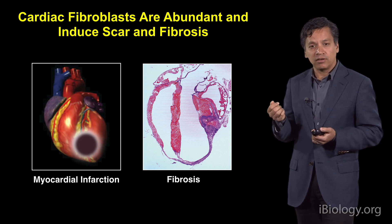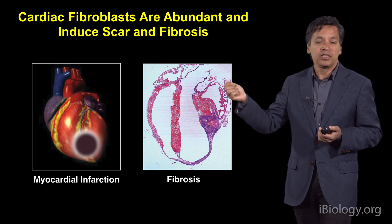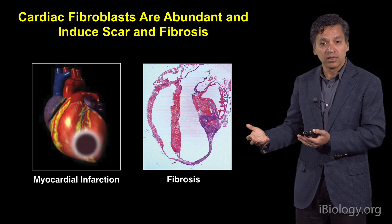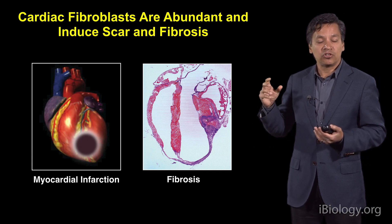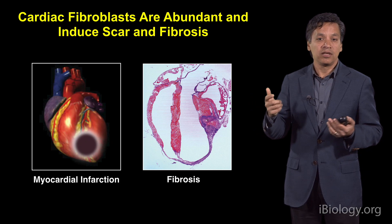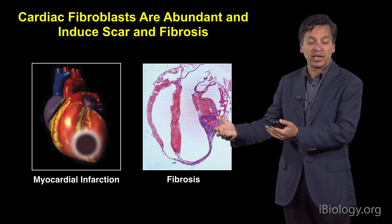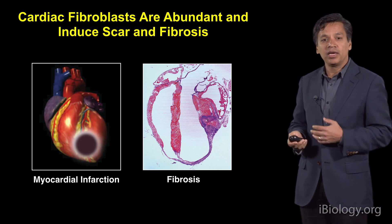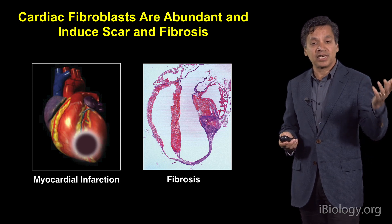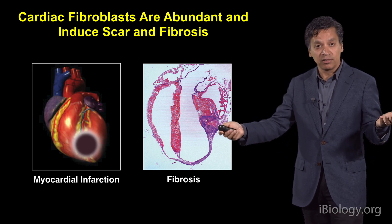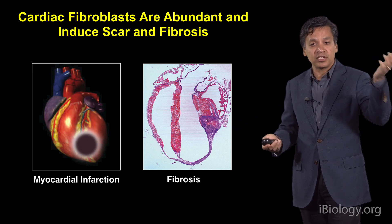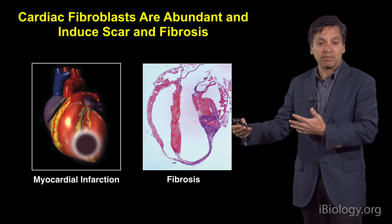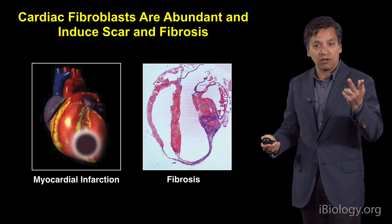Years ago we asked, could we take a different approach and somehow harness the fact that we have this abundant pool of fibroblasts that are already in the organ? Could we somehow trick those cells into not being fibroblasts, but somehow turning into new myocytes — reprogram them into new myocytes? This was really inspired by Shinya Yamanaka's discovery that you could take a skin fibroblast and turn it into a stem cell. So we thought maybe with the right cues we could take this cardiac fibroblast and right there within the organ convert its fate into a new cardiac myocyte, if we knew the right factors to induce that cell fate switch.